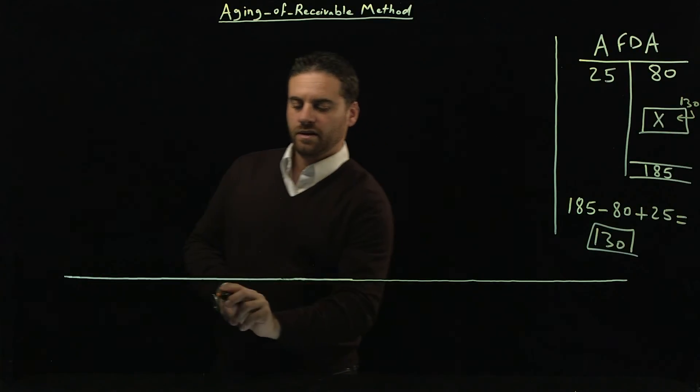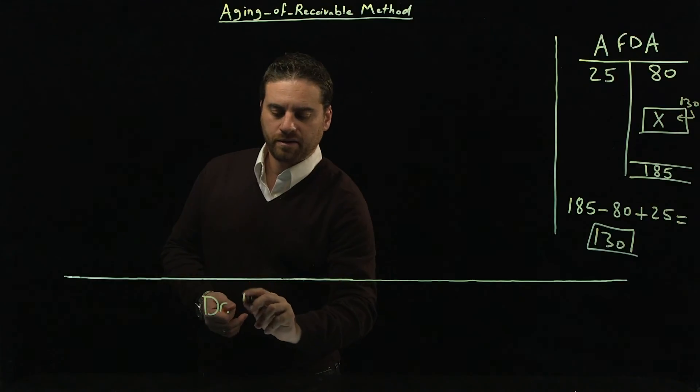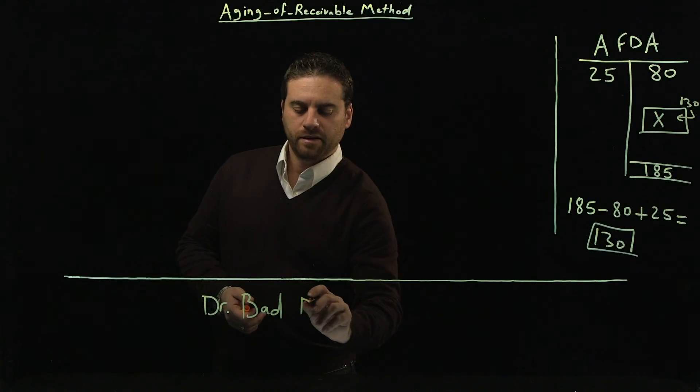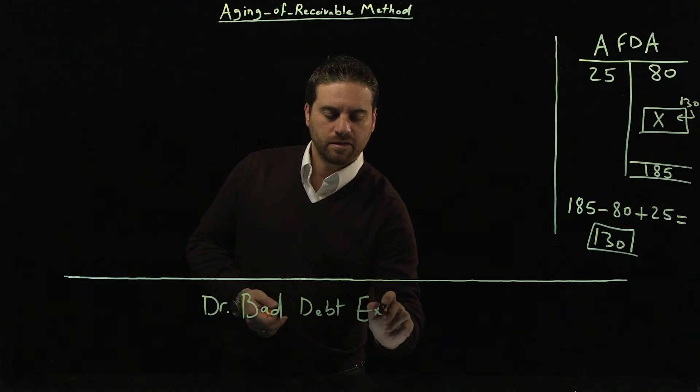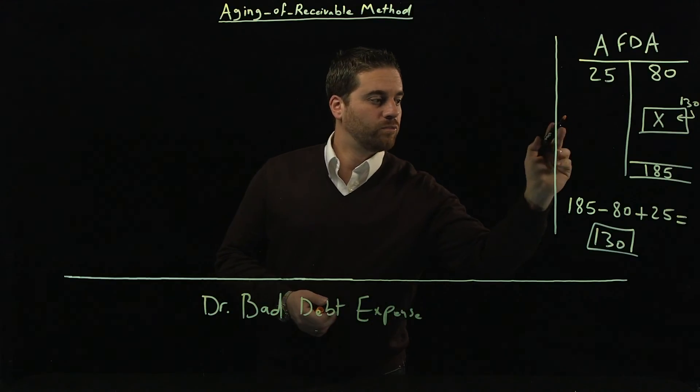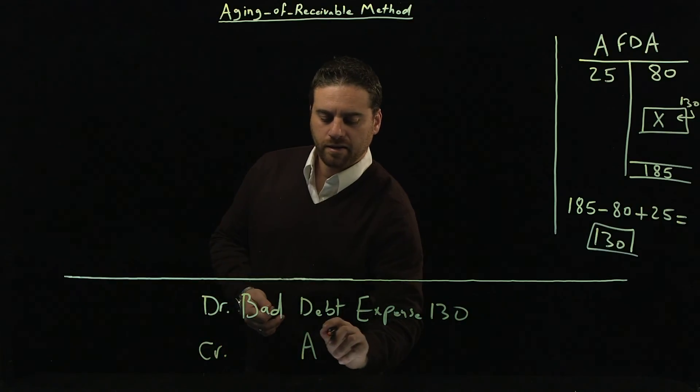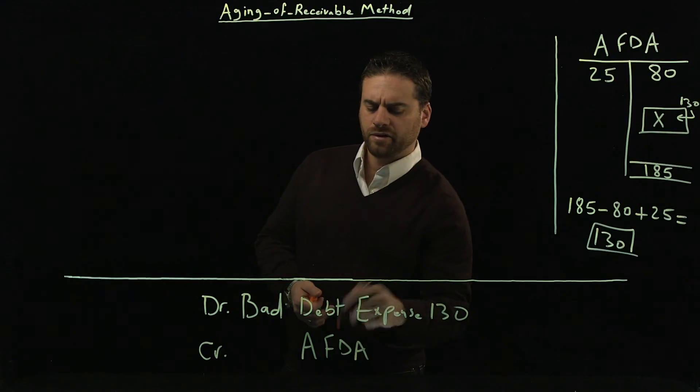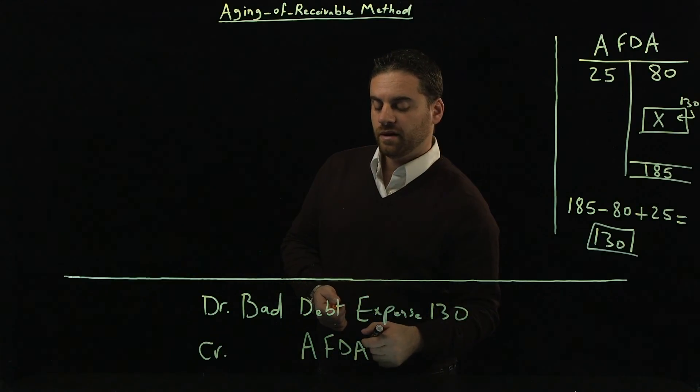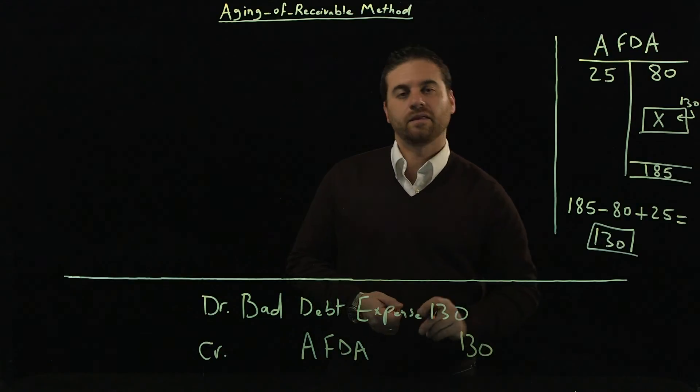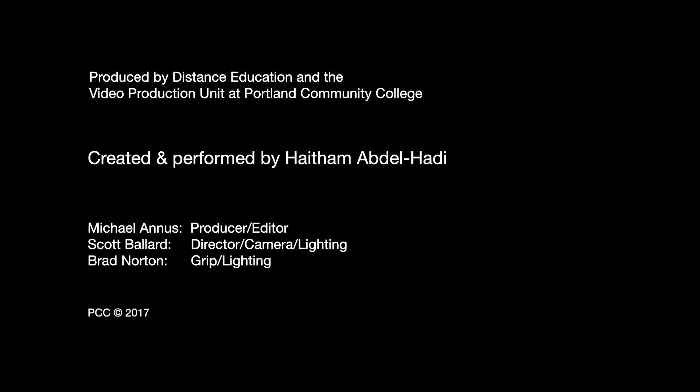And then the journal entry, again, as usual, it's always going to be a debit. Using the allowance method, it's debit to bad debt expense for $130 and then credit to AFDA. Or in the book, it's called allowance for bad debts, $130. In the next videos, we'll talk about the rest of the topics from Chapter 8.